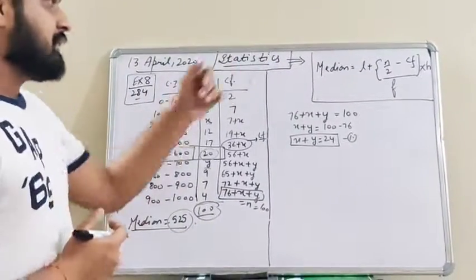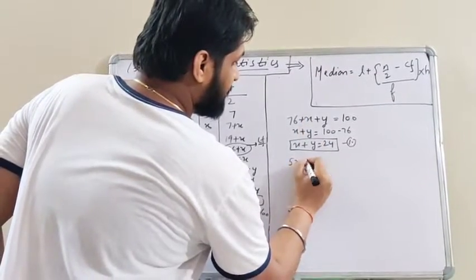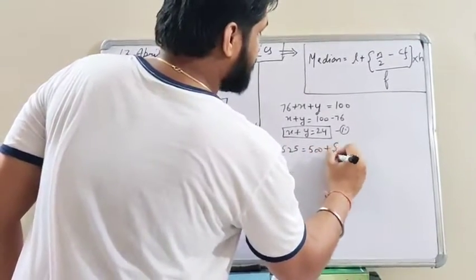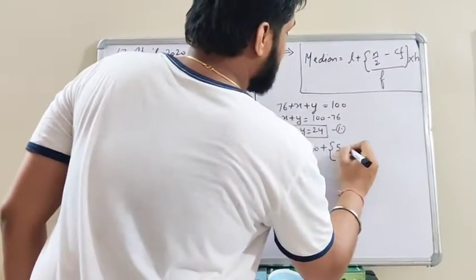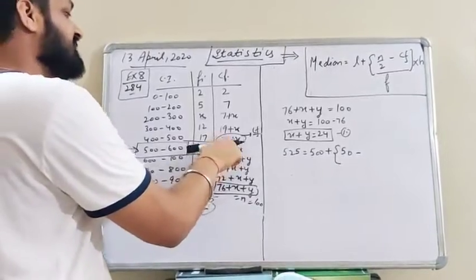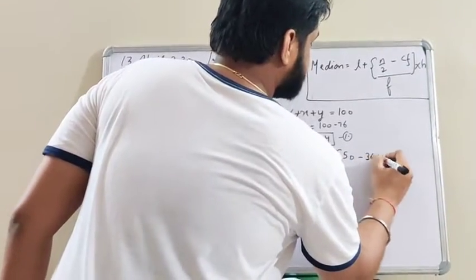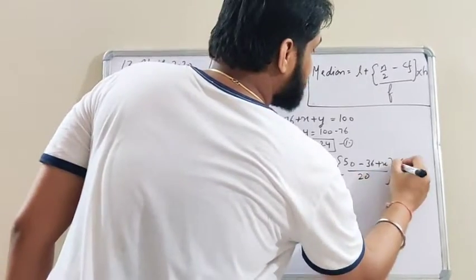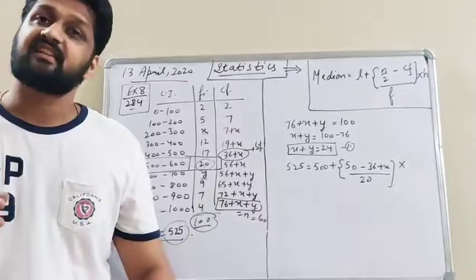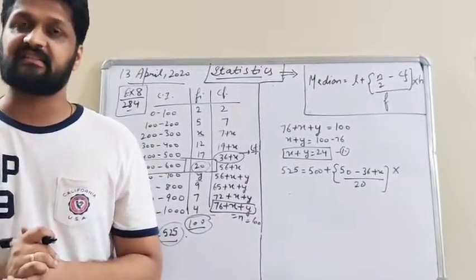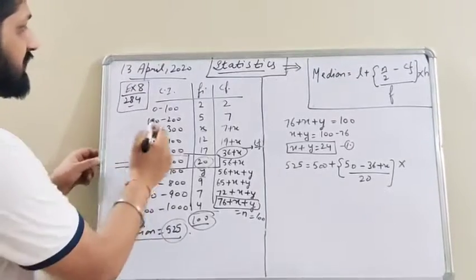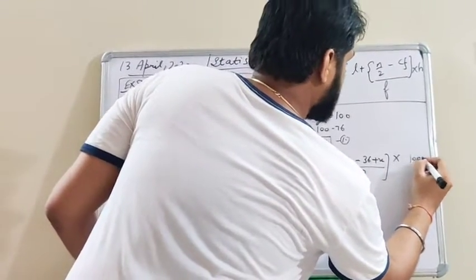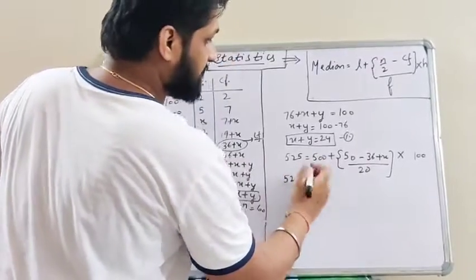Now putting all values into the median formula: median equals L plus (n/2 minus cf) divided by f, multiplied by h. The median is 525, the lower limit of the median class is 500, n/2 is 50, the cumulative frequency just above the median class is 36 plus x, the frequency of the median class is 20, and the class size is 100 (since 100 minus 0 equals 100).